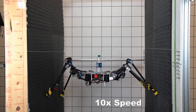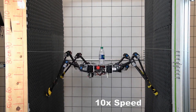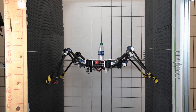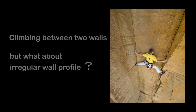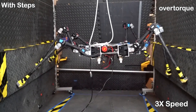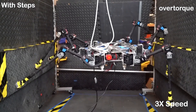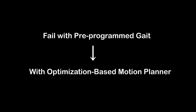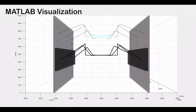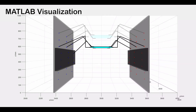In the previous paper, we investigated climbing between two flat walls. But now, what if the walls have an irregular profile? Without a proper planner, the robot tends to slip or over-torque on irregular surfaced walls. This paper uses optimization-based techniques to plan trajectories between two uneven walls.